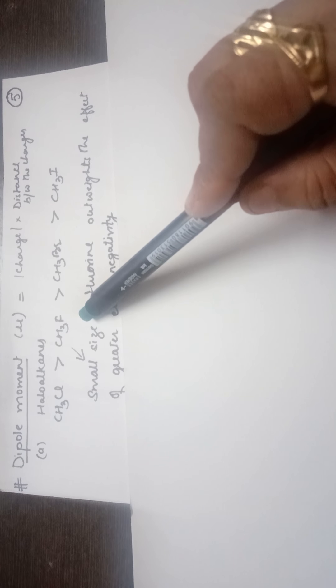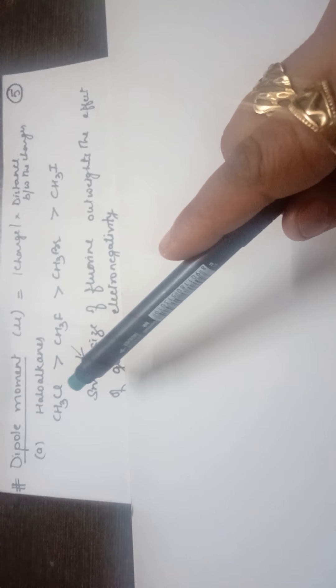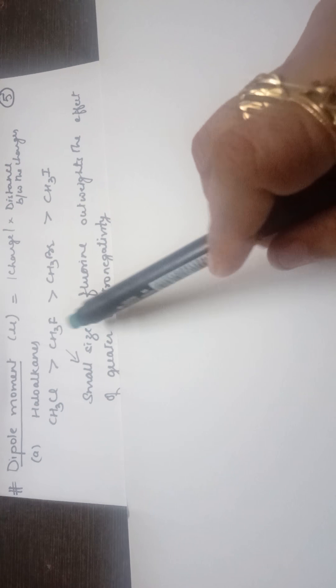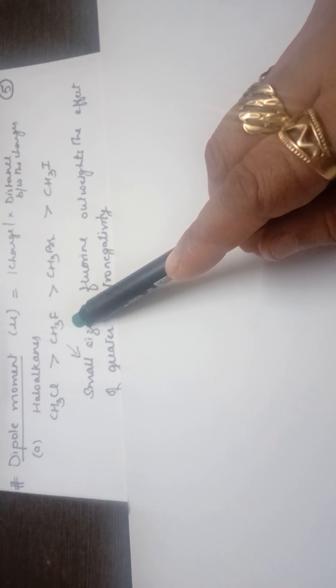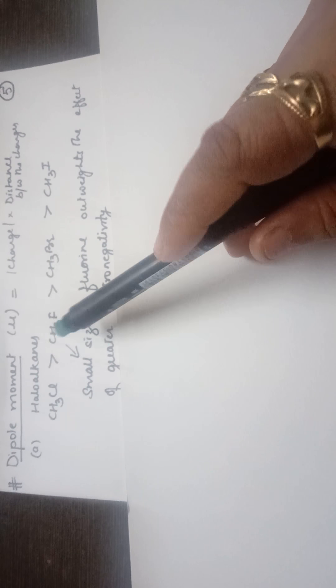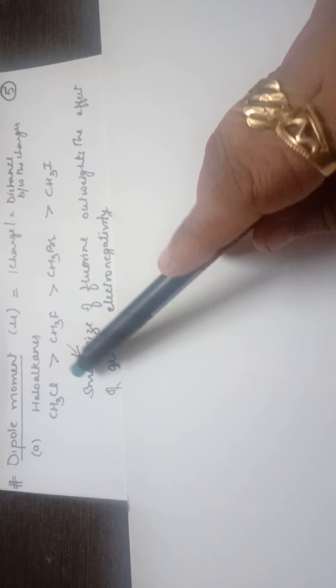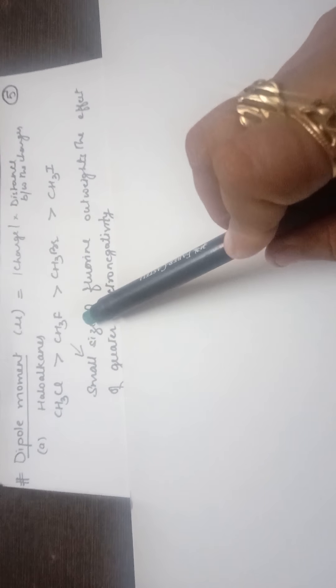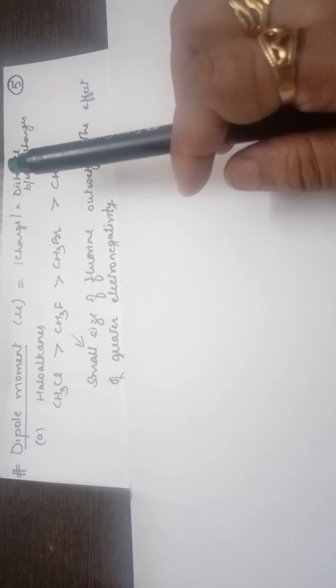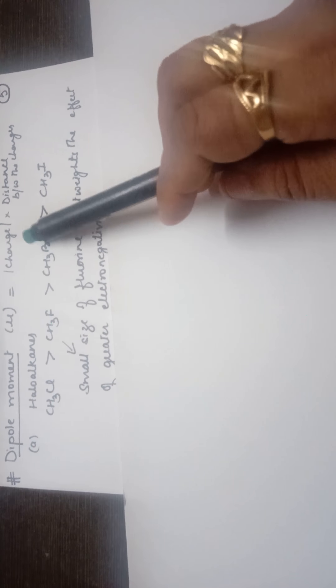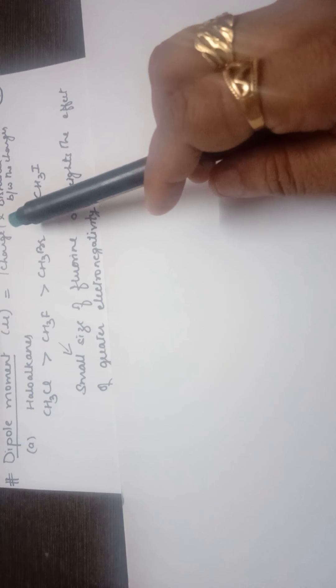That is why the dipole moment is unexpectedly less in the case of alkyl fluoride in comparison to alkyl chloride. If we consider only electronegativity, the dipole moment of methyl fluoride should be more, but it is less. The reason is that the small size of fluorine creates more effect on the dipole moment than the charge. This is a very important point and an exceptional question which can come in the exam.